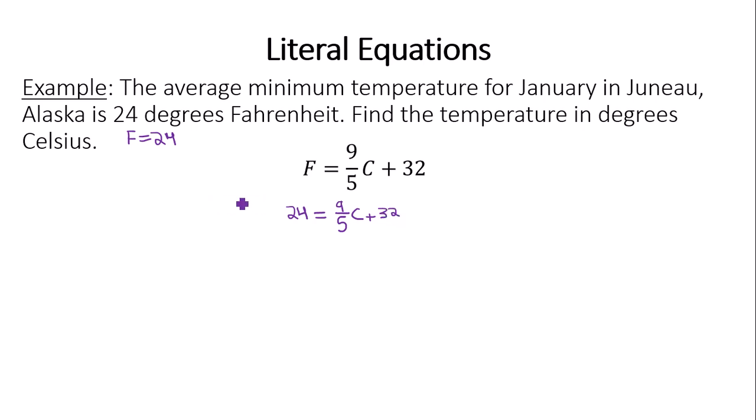I want to find C, so let's multiply through by 5 to get rid of the fraction. Multiply by 5 or 5 over 1 however you want to do it. 5 times 24 will be 120. 5 times 9 fifths is where the 5s cancel leaving you with 9C, and then 5 times 32 would be 160.